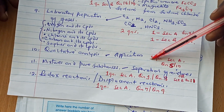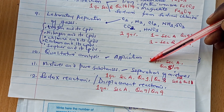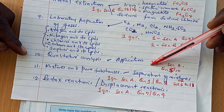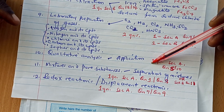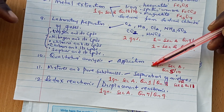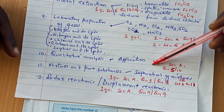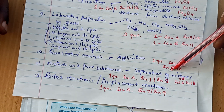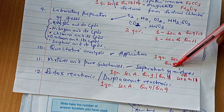The next topic is qualitative analysis. In paper 2, there is application of qualitative analysis ideas. Please revise qualitative analysis very well, not only for paper 3 but also for paper 2. In section A, question number 5 or question number 10 will always come from that area.